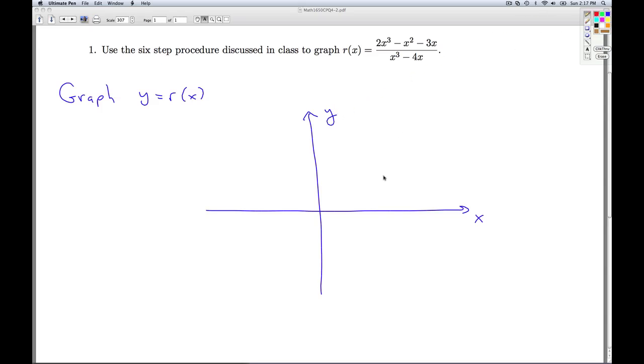The first thing was we didn't have a y-intercept because x equals 0 wasn't in the domain of the function. But when we did plug in x equals 0, we got a hole at 0, 3 quarters. So there's a hole in the graph there.